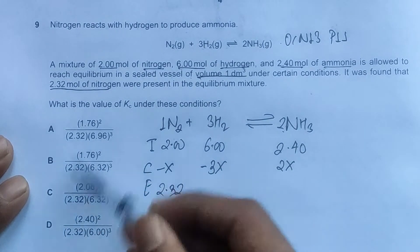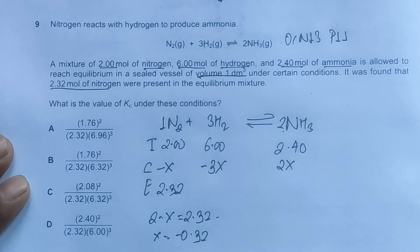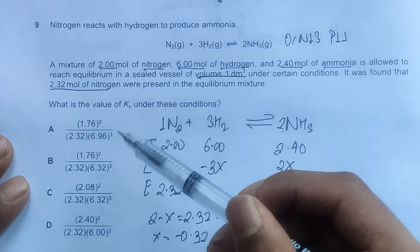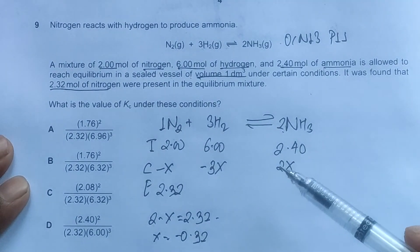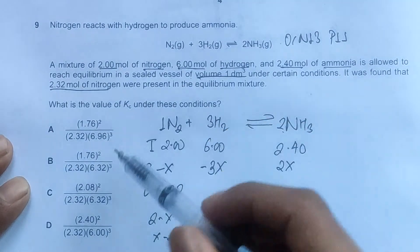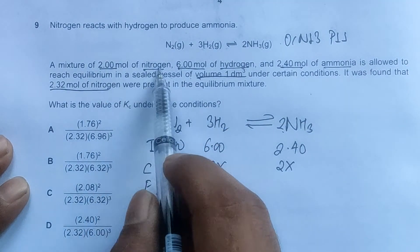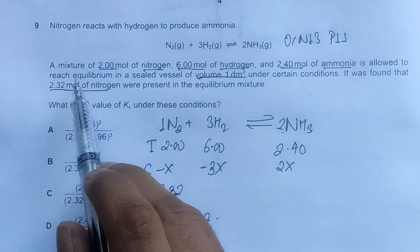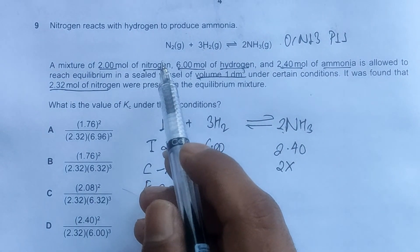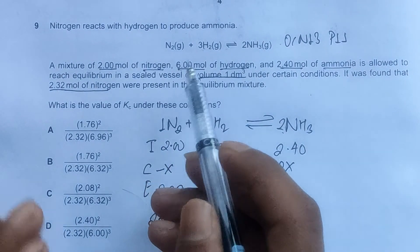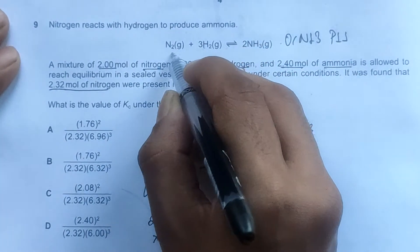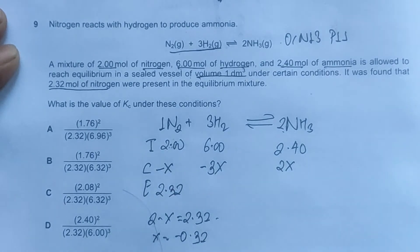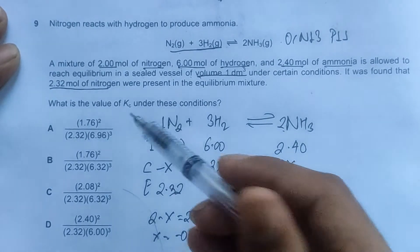All the expressions are correct; we can't reject any value that way. But looking at the options, we're starting with 2 moles of nitrogen and ending with 2.32 moles of nitrogen. That means more yield of nitrogen in equilibrium condition, which means equilibrium favors the reactant side, not the product side. More yield of nitrogen should also mean more yield of hydrogen and less yield of ammonia.